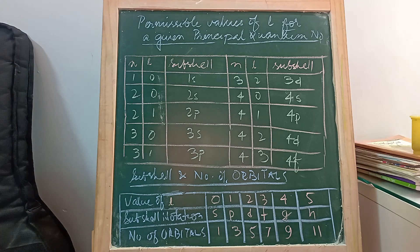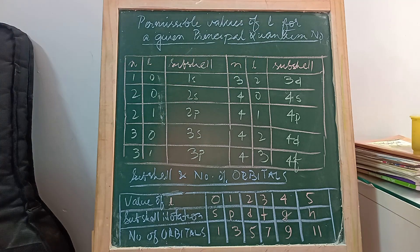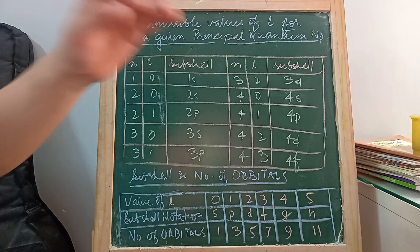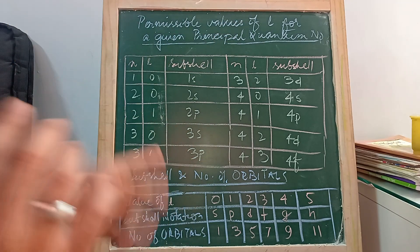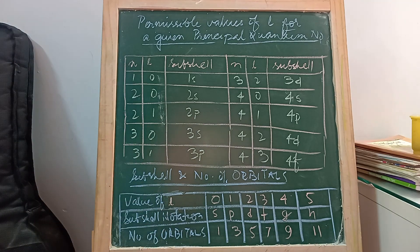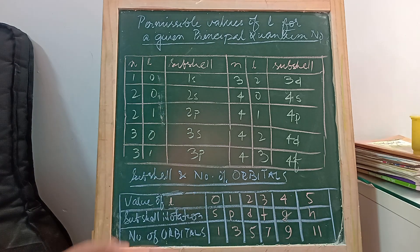Let's try to understand the relationship between the initial values of L, the azimuthal quantum number, for a given principal quantum number. Quantum numbers are the numbers which we obtain as a solution to Schrödinger's wave equation, and they define and describe orbitals in which there is a maximum probability of finding electrons.